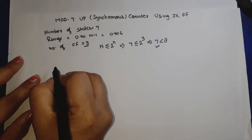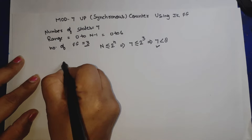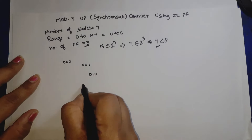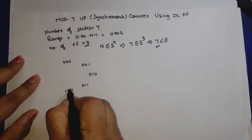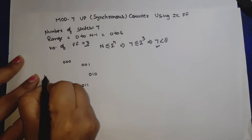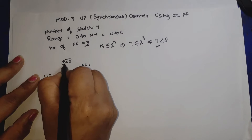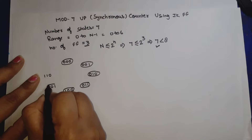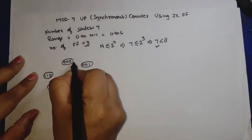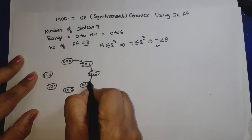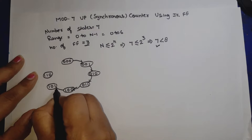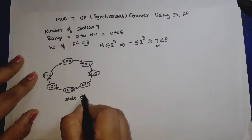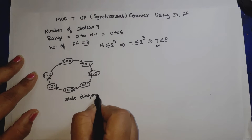Now we draw the state diagram. The counter counts: 000, then 001, then 010, then 011, then 100, then 101, then 110. That's states 0 through 6 — zero to one, one to two, two to three, three to four, four to five, five to six, and six back to zero.